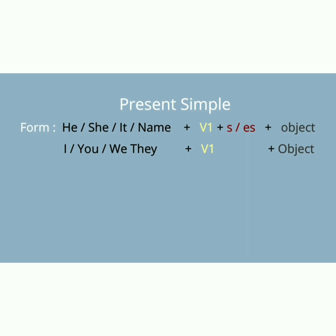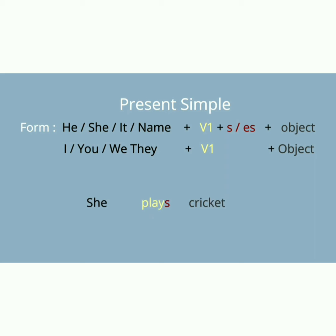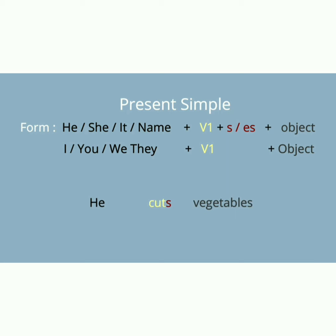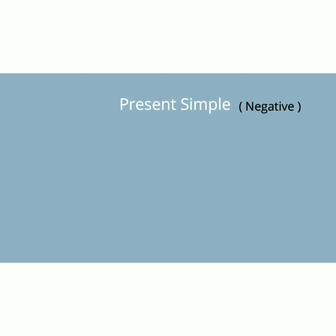Singular کے ساتھ first form + S/ES اور object۔ Plural کے ساتھ first form + S/ES نہیں آئے گا۔ Examples: She plays cricket. We play cricket. He cuts vegetables. They cut vegetables. یہ میں example سے آپ کو سمجھا رہی ہوں — ان کو دھیان سے دیکھنا اور learn کرنا ہے۔ Present simple — very easy۔